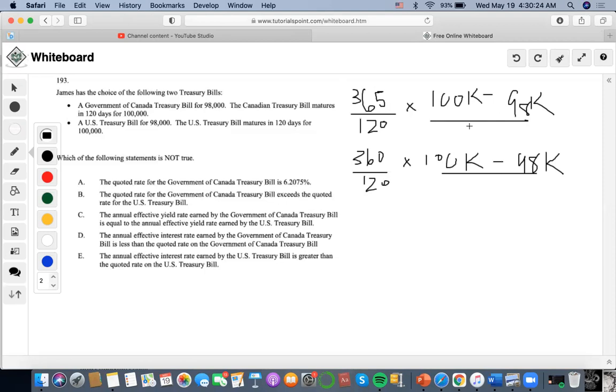For the denominator, we always have to remember that the purchase price goes in the middle. And for the denominator for US, the maturity price is always in the denominator. Okay, so let's solve for both of these.